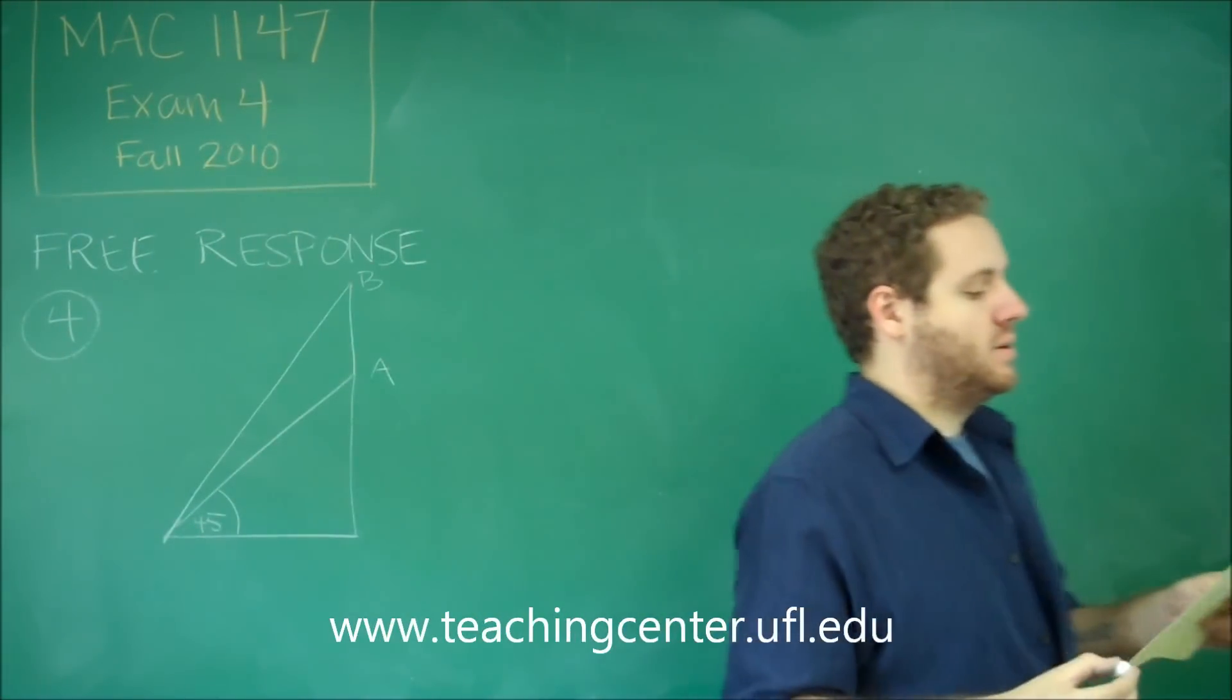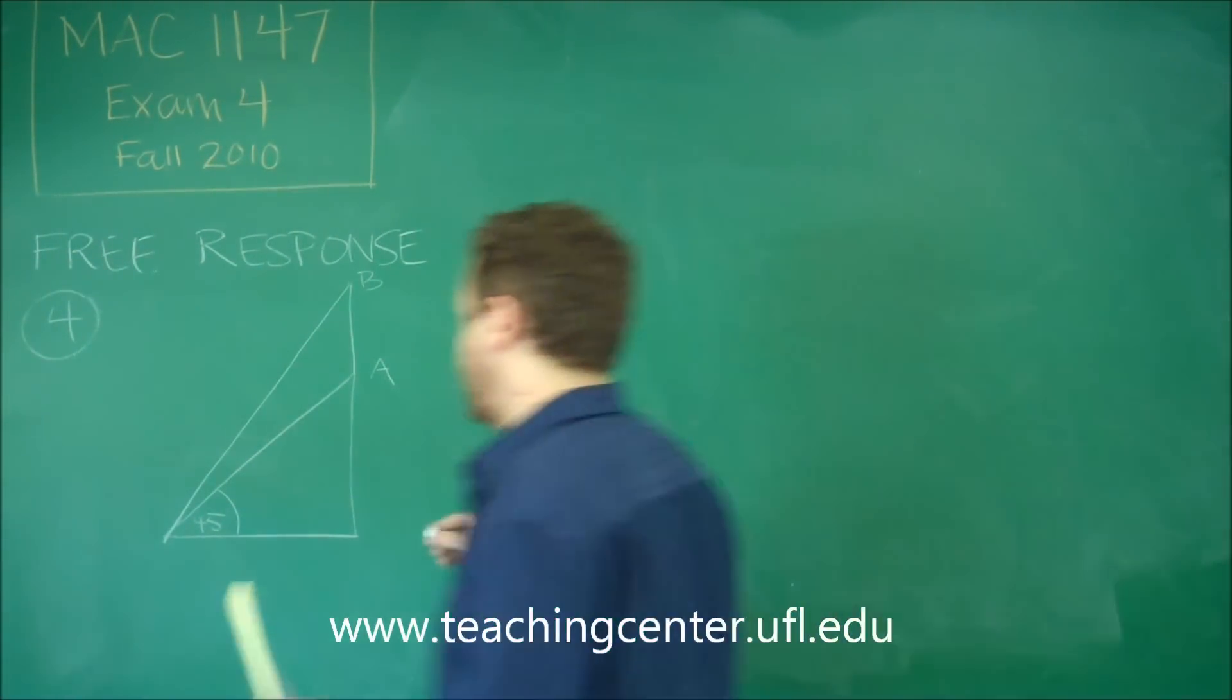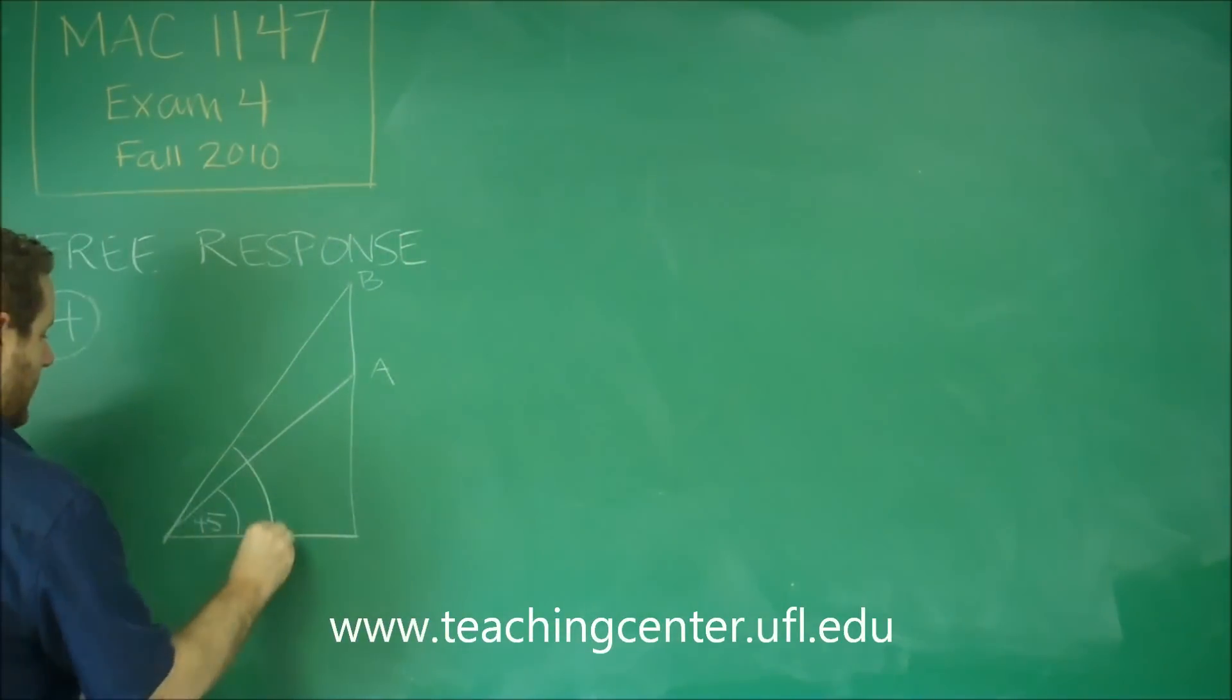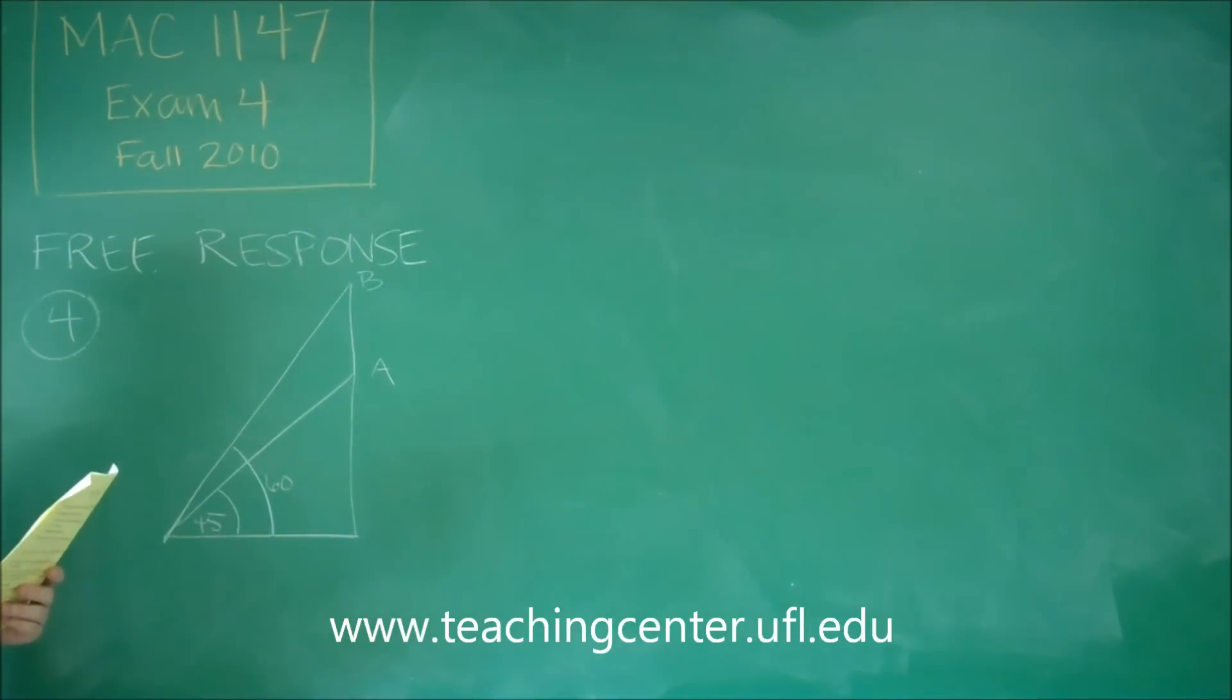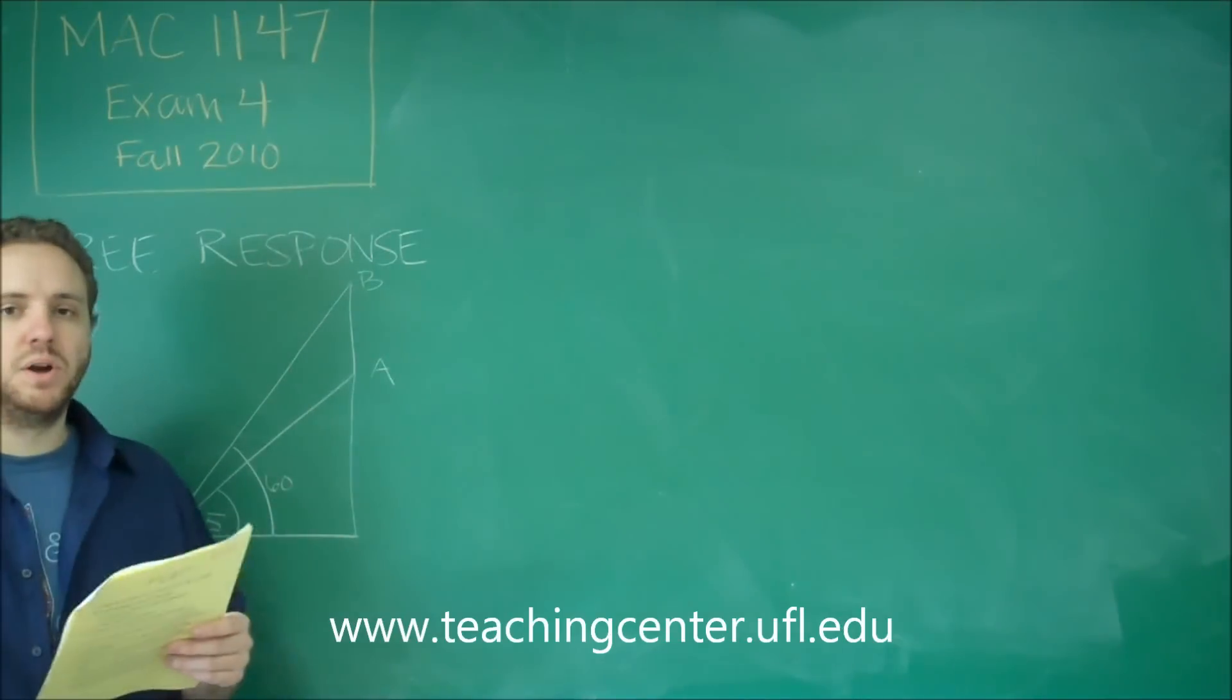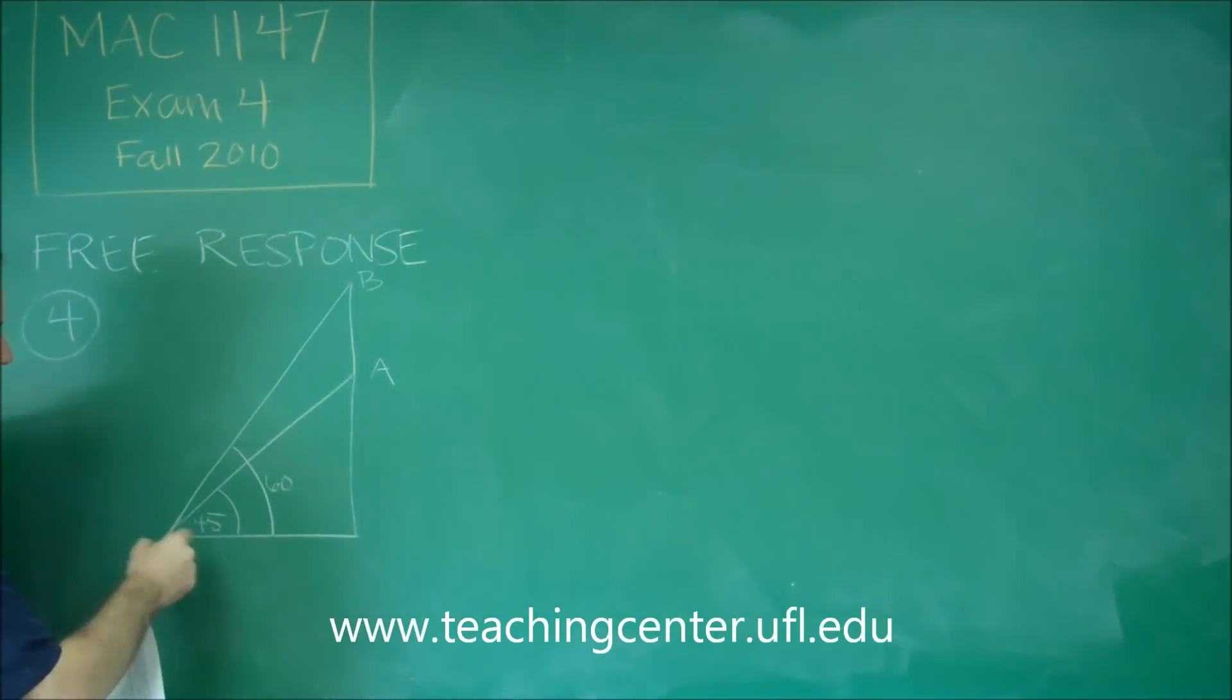Two minutes later, the angle of elevation is 60. So that tells you that this angle is 60 degrees, the angle between the ground and the line going up to point B. So it says label the angle of elevations on the sketch. 45 is the first angle, 60 is the second angle.